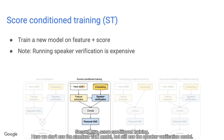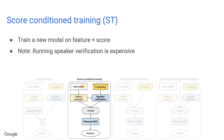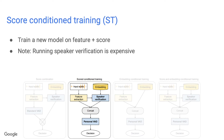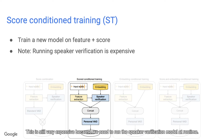The second architecture is score-conditioned training. Here we don't use the standard VAD model, but still use the speaker verification model. We concatenate the speaker verification score with the acoustic features and train a new Personal VAD model on top of the concatenated features. This is still very expensive because we need to run the speaker verification model at runtime.